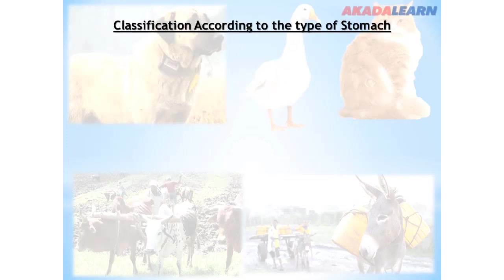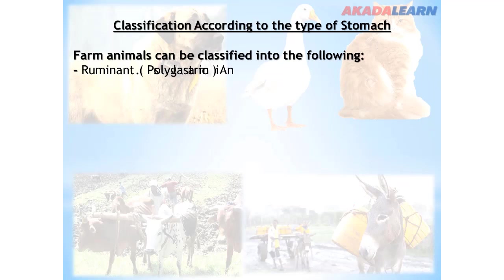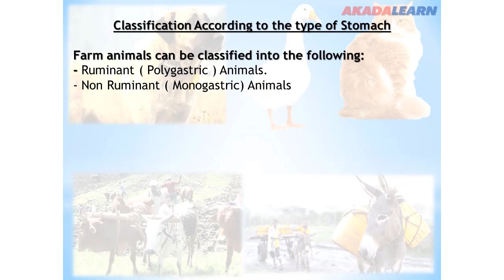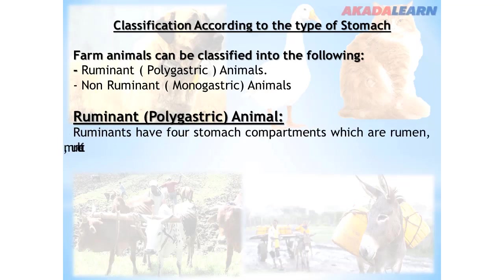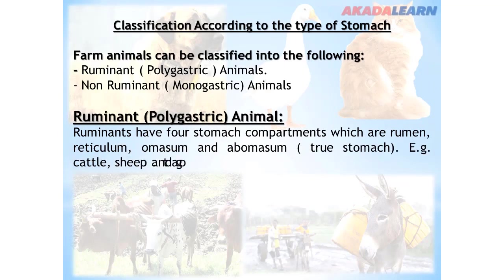Classification according to types of stomach: farm animals can be classified into ruminant or polygastric animals, and non-ruminant or monogastric animals. 'Poly' means many while 'mono' means just one. Ruminants have four stomach compartments: the rumen, reticulum, omasum, and abomasum — the abomasum being the true stomach. Examples of ruminant animals are cattle, sheep, and goats.